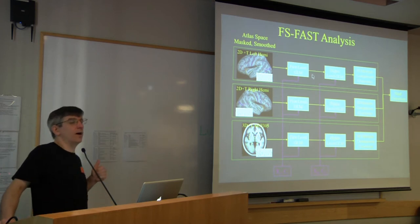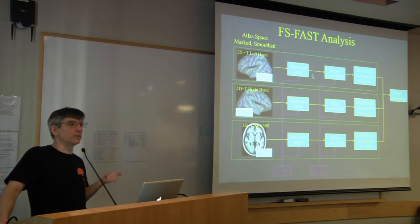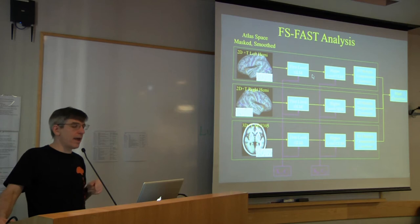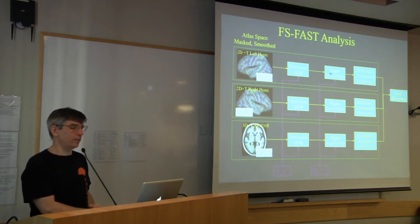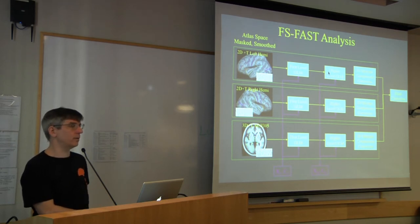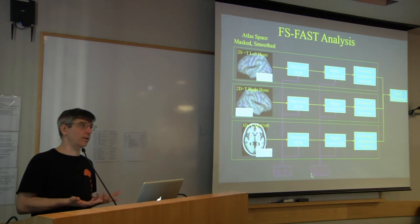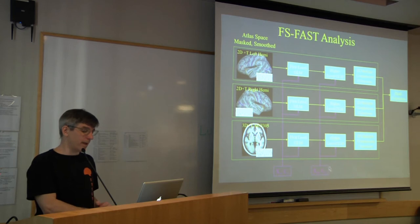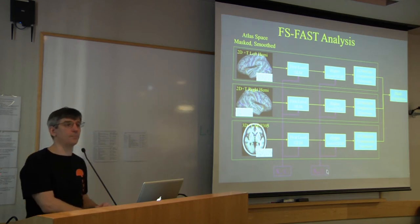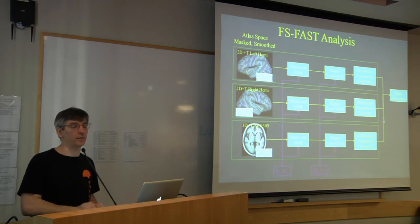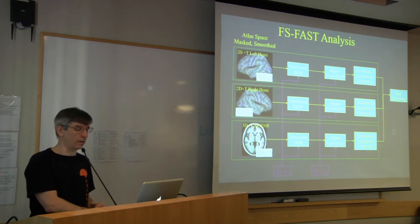The result from the first-level GLM is a set of contrasts. Those contrasts are data reduction — you've taken the time series data and reduced it down to one number per voxel. You then pass that to the higher-level GLM using MRI GLM fit, run in each space. This requires a higher-level design matrix (chosen or generated from an FSGD file), higher-level contrast matrices, correction for multiple comparisons, and finally combining all three tables into a single publication table.